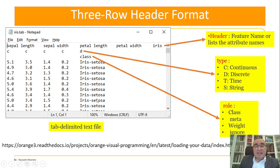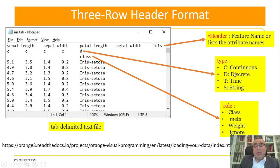Any specific dataset has three rows at the beginning. The first row represents the header — the feature names or attribute names. So we have these attribute names that will be used in the dataset. The second row will be the type of each column.